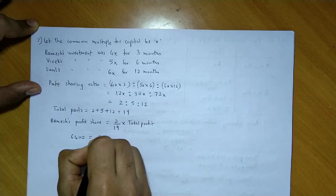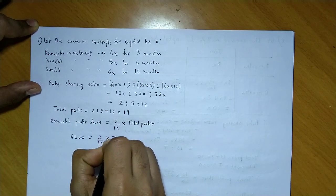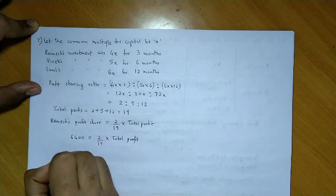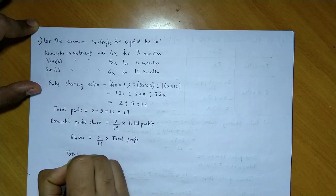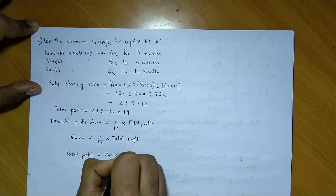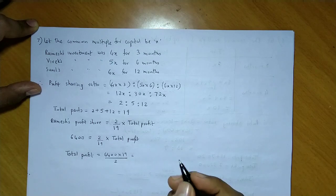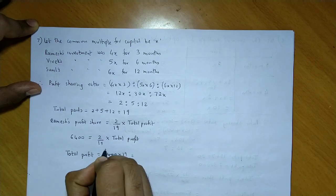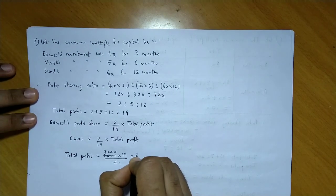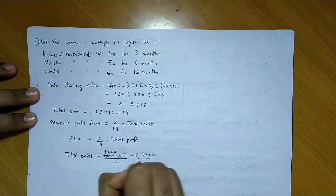Ramesh's share: 6400 = (2/19) × total profit. Therefore, total profit = 6400 × (19/2) = 3200 × 19 = 60,800. So the total profit is 60,800.